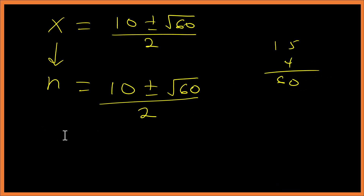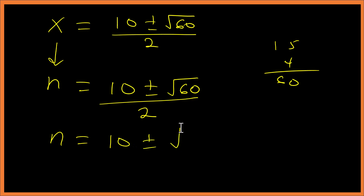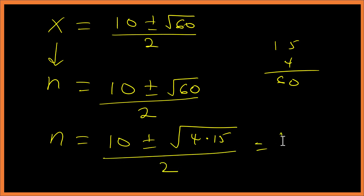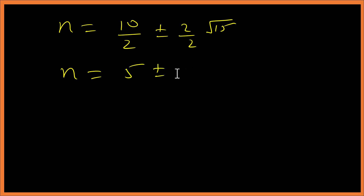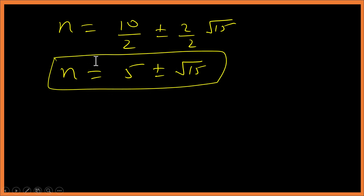Now let's simplify square root of 60. Since 15 times 4 equals 60, we can write it as square root of 4 times 15, which equals 2 root 15. So n equals 10 plus or minus 2 root 15, all over 2, which simplifies to n equals 5 plus or minus root 15.